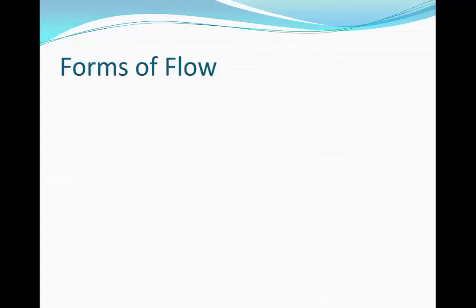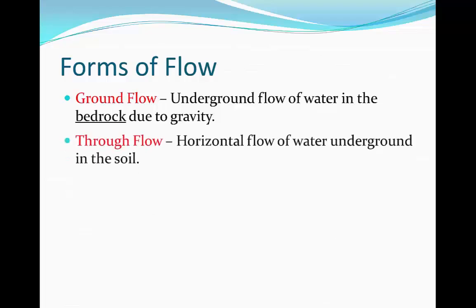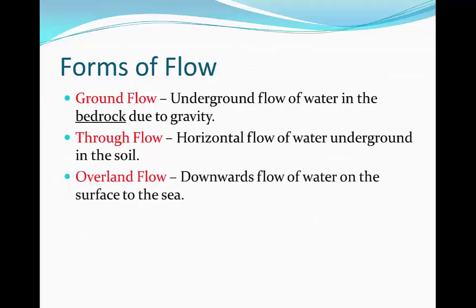Now we're going to look at the forms of flow. Ground flow then occurs when the water is then percolated into the bedrock. This is the underground flow of the water in the bedrock due to gravity. Through flow is the horizontal flow of water underground in the soil. That happens when the water infiltrates into the soil. And overland flow occurs when the downward flow of water on the surface towards the sea. This happens when the water hasn't even infiltrated into the soil.